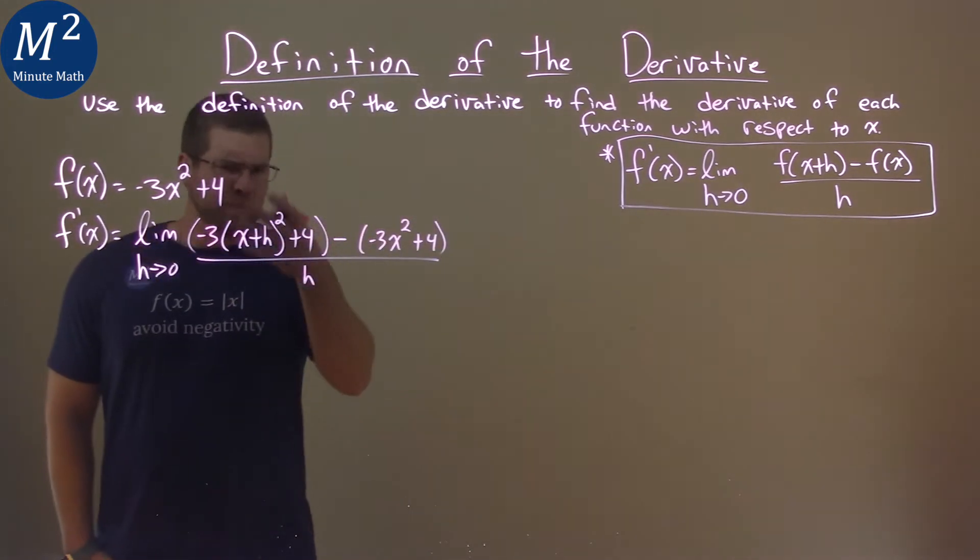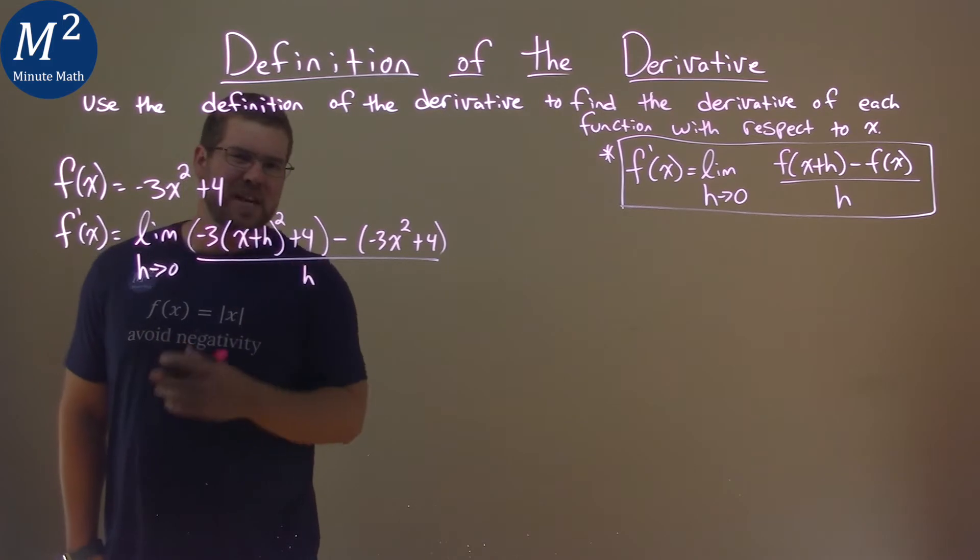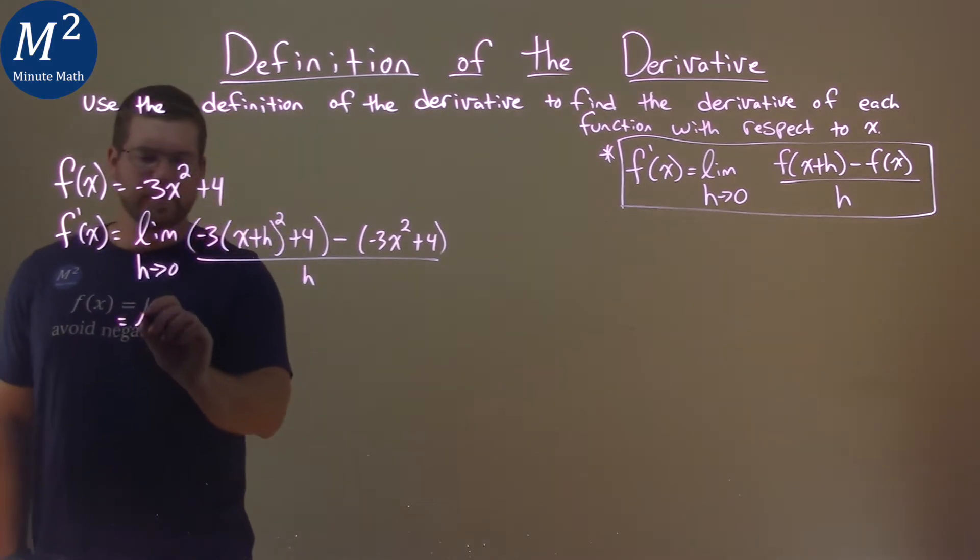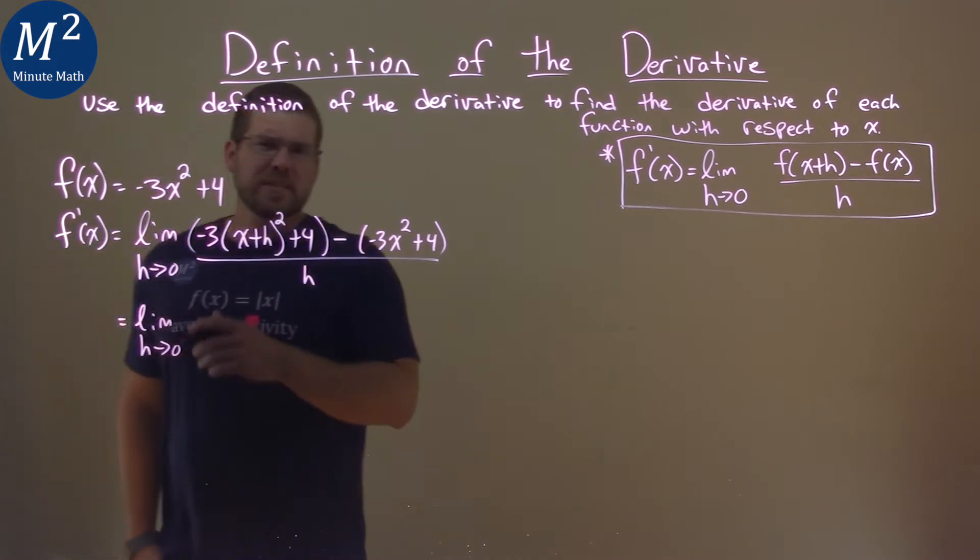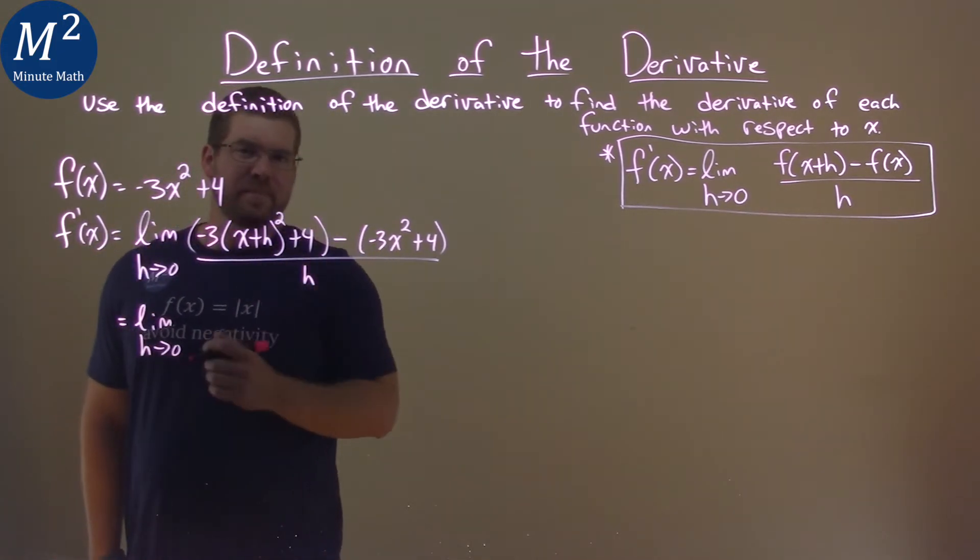So, from here, where do we go? Well, we've got to try to simplify and try to get h out of that denominator. So, again, we still have to take the limit as h approaches 0. Let's multiply out what we can in our numerator.